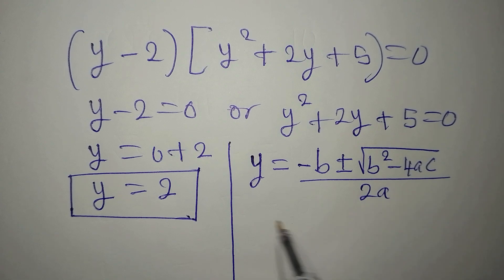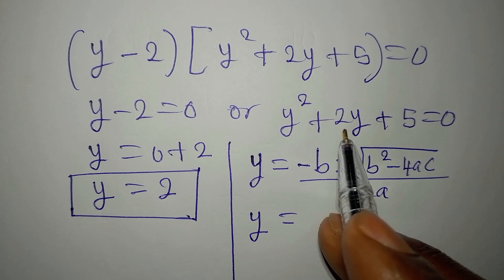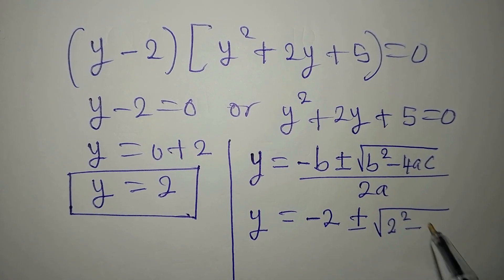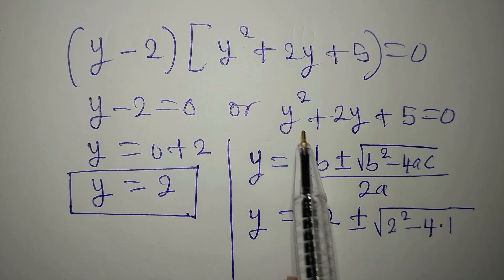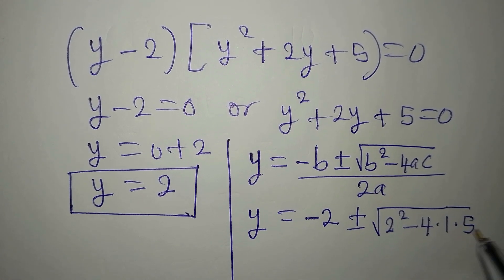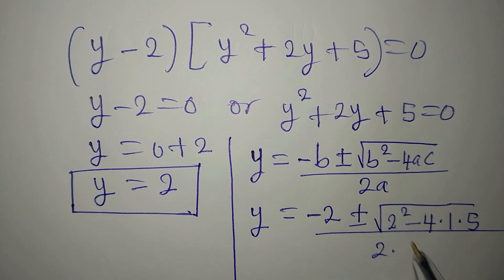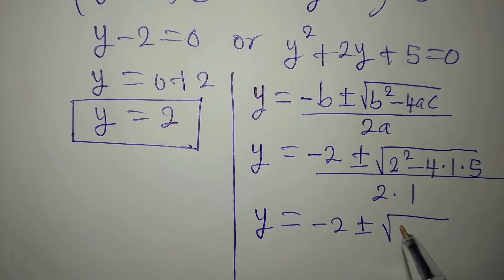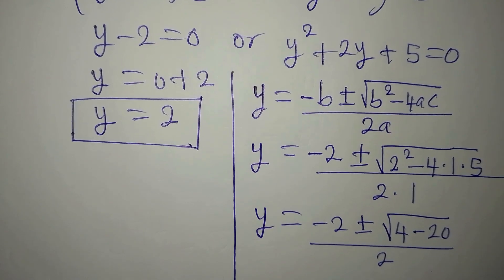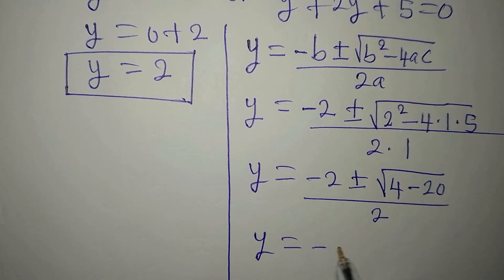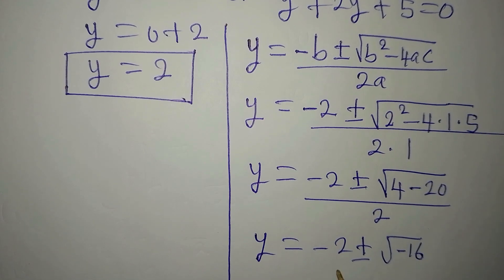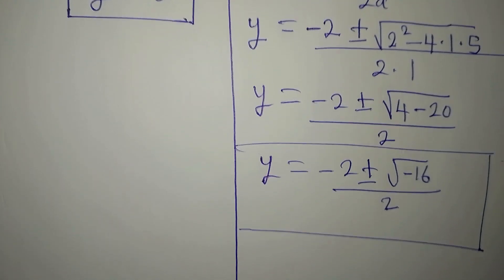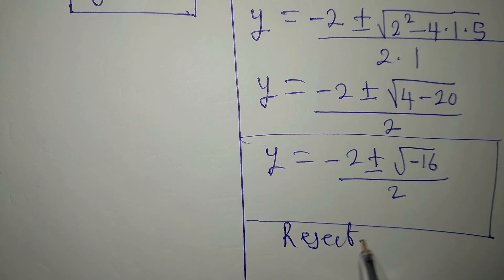Using the quadratic formula, y equals negative b plus or minus square root of b squared minus 4ac, all over 2a. Here b is 2, a is 1, and c is 5, so y equals negative 2 plus or minus square root of 4 minus 20, over 2. This gives square root of negative 16, which is imaginary, so this solution is rejected since we want only real solutions.